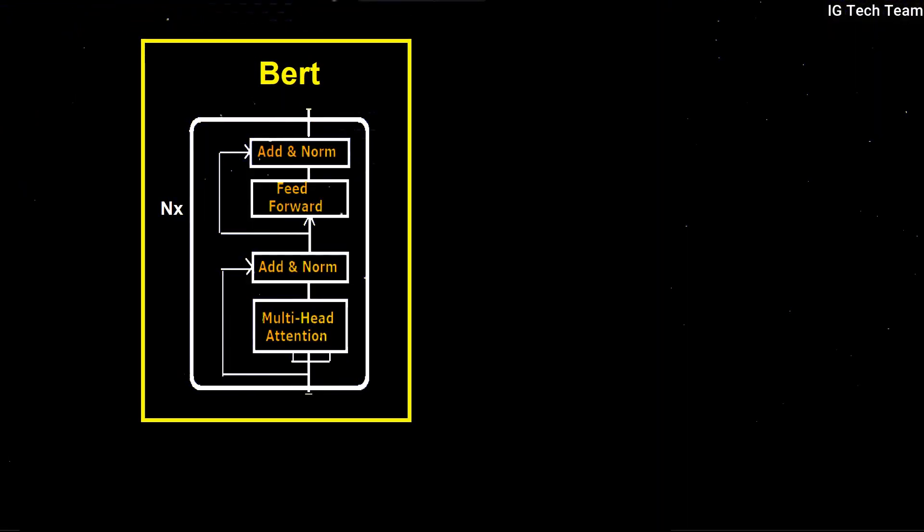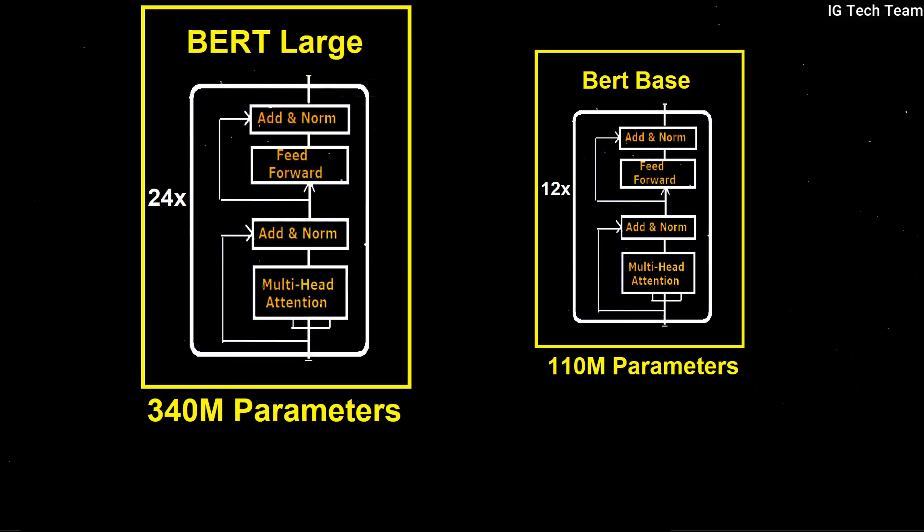In comparison, BERT is truly bi-directional. We will see why later. BERT is pre-trained on a large corpus of unlabeled data, which includes the entire Wikipedia and book corpus. Due to this pre-training step, BERT is very powerful. BERT is released in two sizes: BERT Large, containing 340 million parameters, and BERT Base, containing 110 million parameters. BERT Large improves accuracy compared to BERT Base.